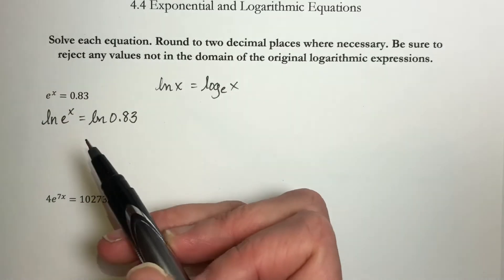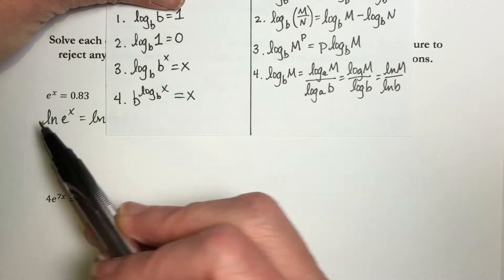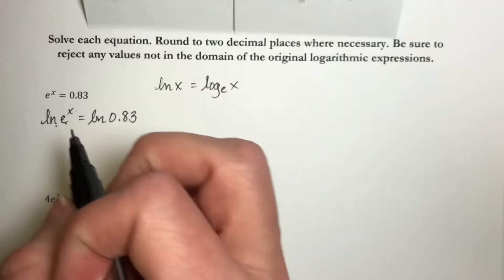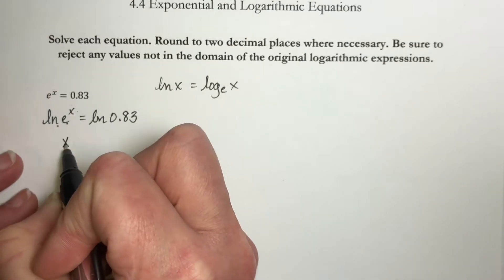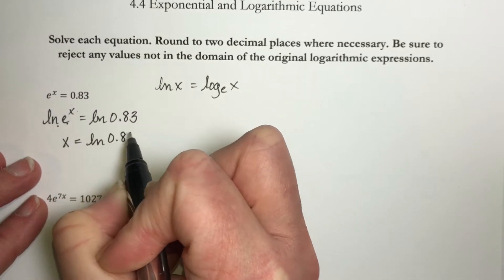This is exactly property number 3. We have the same base on our natural log as we do on the exponential, so this just becomes x. So I have x equals natural log of 0.83.